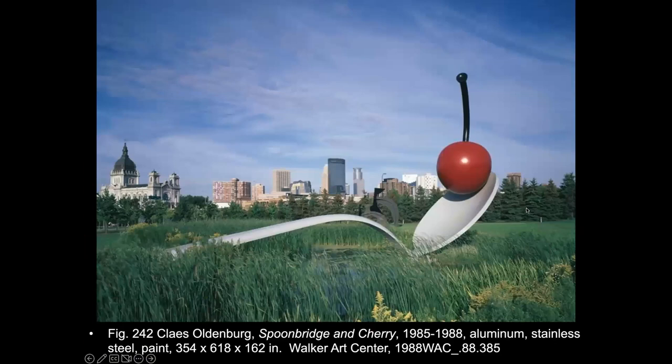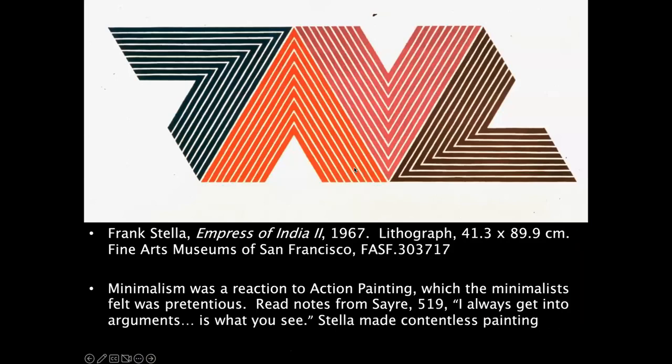Oldenburg's 'Spoonbridge and Cherry' is another example. Then there's Frank Stella, doing a style that became very popular and is still seen today — it even became a decorating style you'd find at IKEA. This one's called 'Empress of India 2.' Despite the suggestive names, Stella's idea with these pieces is that they didn't have any meaning. Minimalism, like pop art, was a reaction to action painting, but it's not necessarily trying to show anything from real life or even make a comment at all.